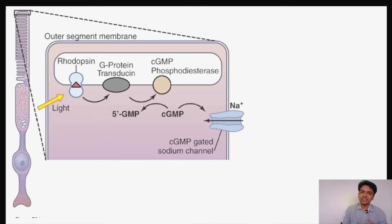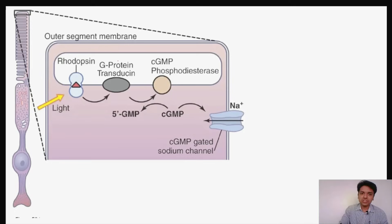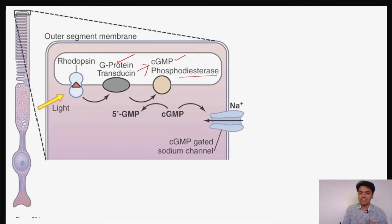When light strikes the rod, the rhodopsin present in the rod is converted through several intermediates into the important compound metarhodopsin 2. Metarhodopsin 2 causes activation of a protein called G-protein transducin. G-protein transducin then causes activation of the enzyme cyclic GMP phosphodiesterase.